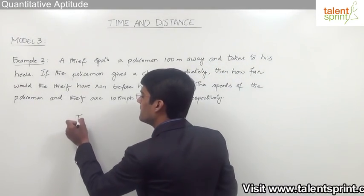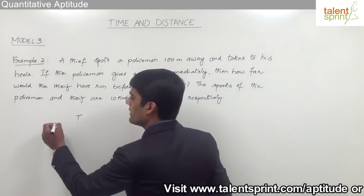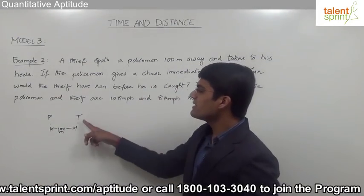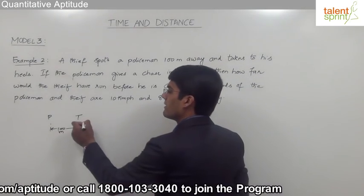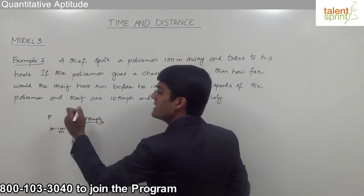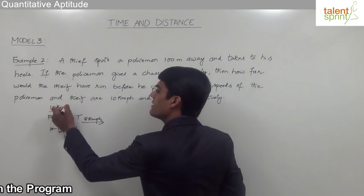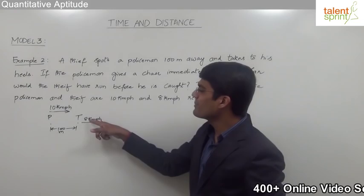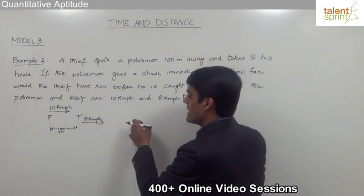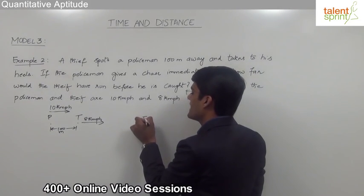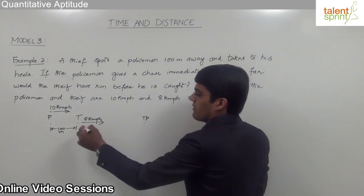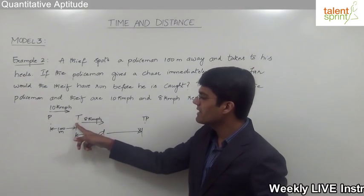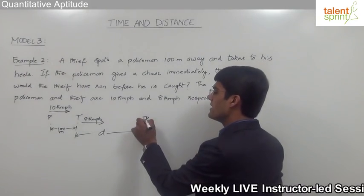The thief is standing at one point and the policeman is 100 meters away, so the initial distance between them is 100 meters. As soon as the thief spots the policeman, he starts running at 8 km per hour, and immediately the policeman starts chasing at 10 km per hour. Since they are running in the same direction, the thief gets caught at some point because his speed is less than the policeman's. We need to find the distance the thief covers before he is caught.